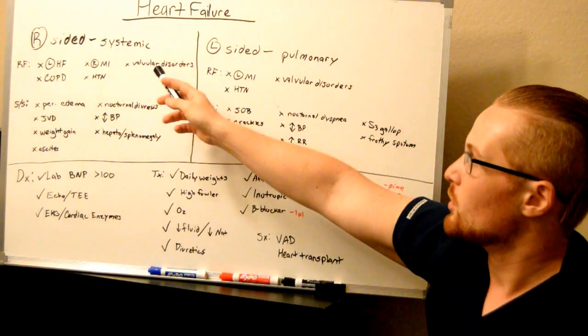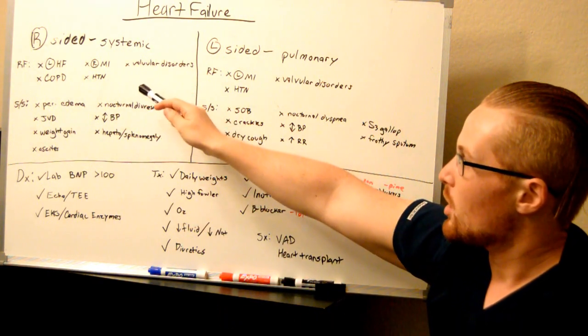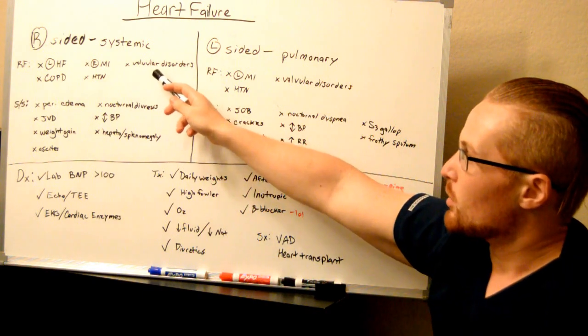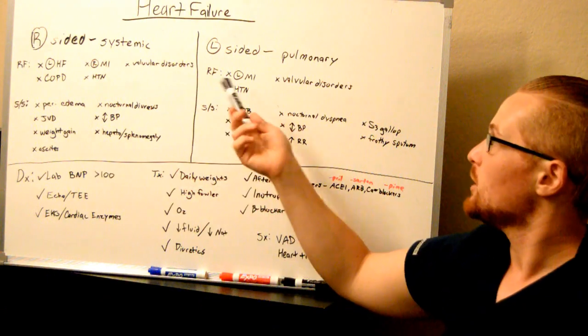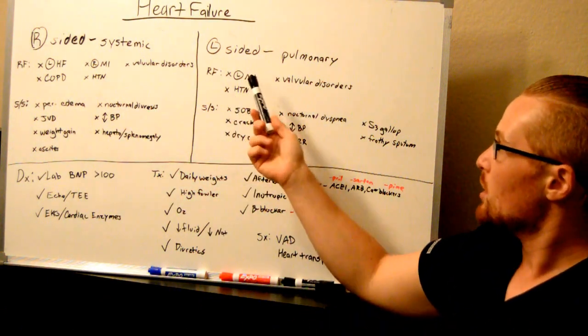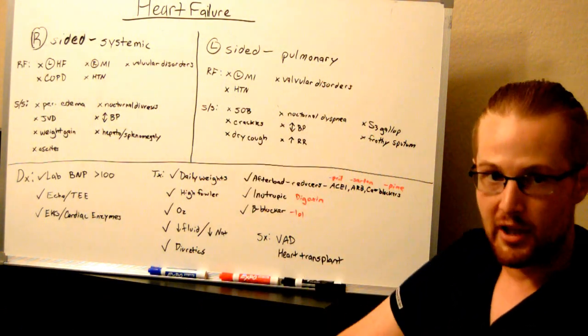What are some other risk factors for right side of the heart? If you have a heart attack on the right side of the heart or you have valves that are not working on the right side of the heart or you have hypertension. Left sided, if you have a left sided heart attack, left sided valve disorders or hypertension.